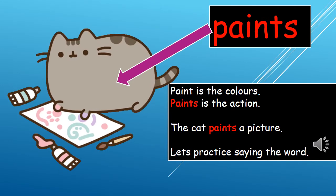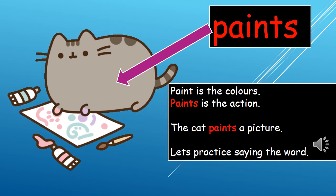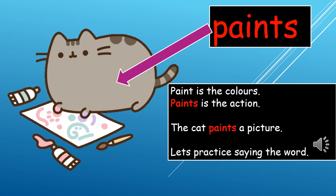The next word we will see today is paints. Paint is the color we use to create pictures. Paints is the action — it's like the verb form of the word. Look at our picture: the cat paints a picture. When we add S to some nouns, it changes to the verb form and shows us an action. Paint is the physical thing we can see and touch, but if we say the cat paints a picture, that means the cat is using paint and making his own picture.